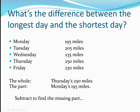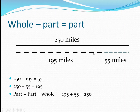The whole is Thursday's 250 miles. The part is Monday's 195 miles. We're going to subtract to find the missing part. 250 minus 195 is 55. 250 minus 55 is 195. Part plus part equals whole: 195 plus 55 equals 250.